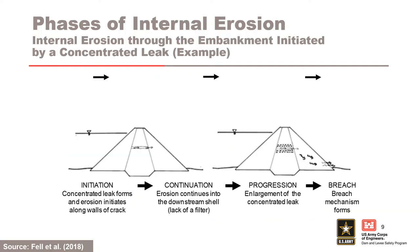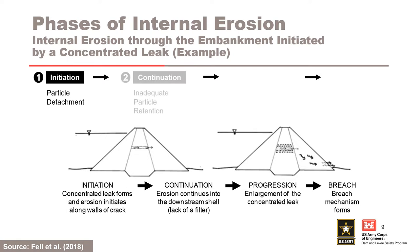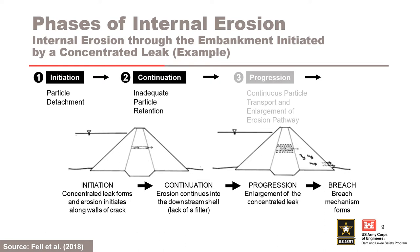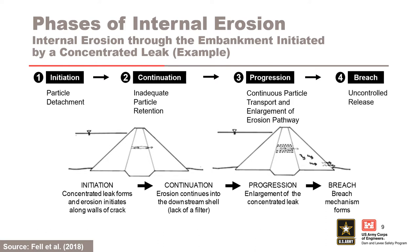The process of internal erosion has been generally broken into four phases in the best practices manual and internationally in ICOLD Bulletin 164. Initiation involves detachment of soil particles. Continuation involves inadequate particle retention based on filtering considerations. Progression involves continuous particle transport and enlargement of the erosion pathway. Failure or breach is characterized by the sudden, rapid, and uncontrolled release of impounded water or liquid-borne solids, according to FEMA 2015.